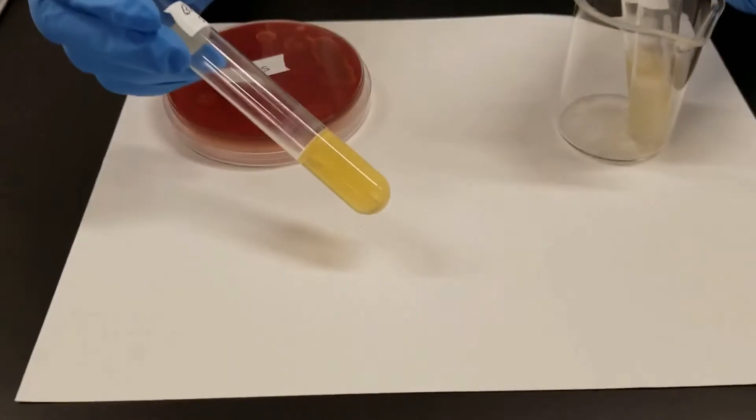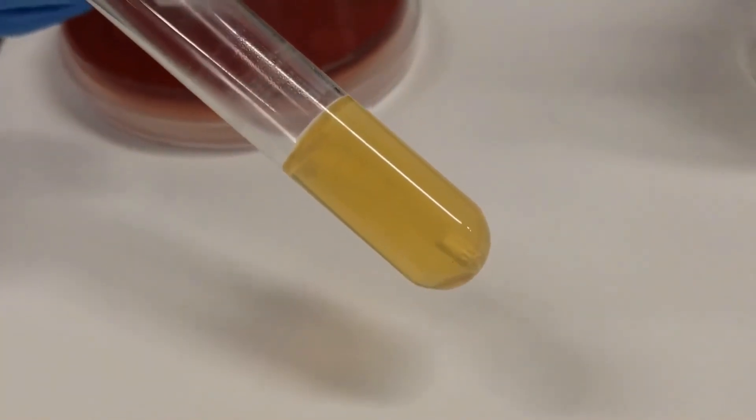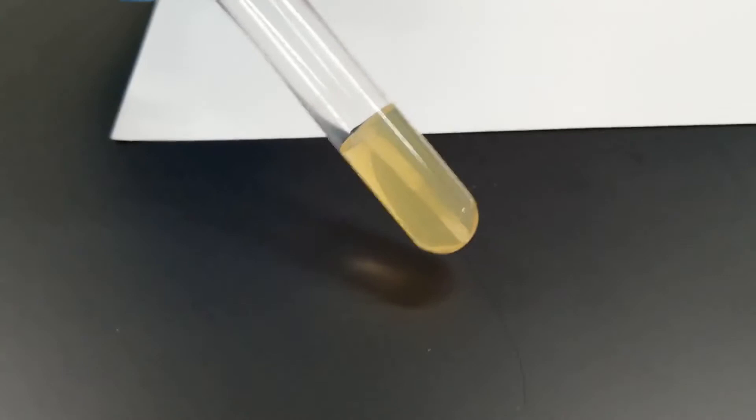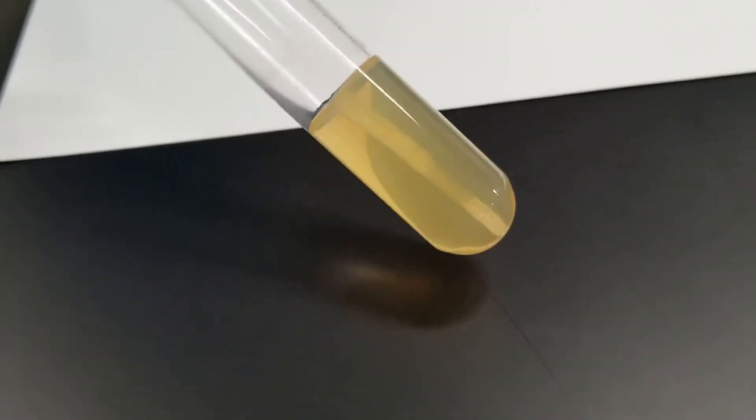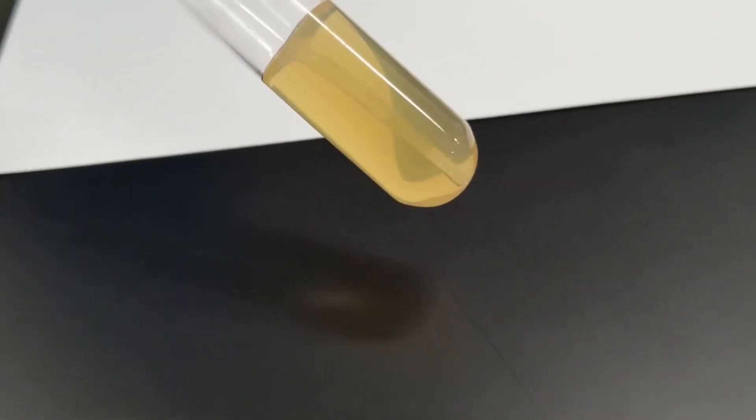This is called brain heart infusion. If you need it over the black, we'll move down here. You can see along the stab line there is some growth, mostly along the initial half of the stab.